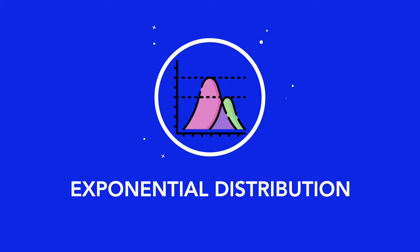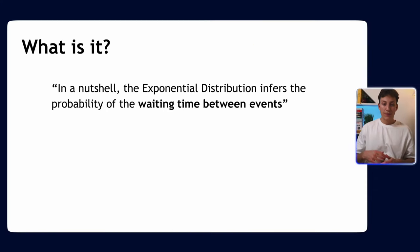Let's first begin with understanding what is the exponential distribution. In a nutshell, the exponential distribution infers the probability of the waiting time between events. It's saying how long until an event happens given it happens at a certain rate.